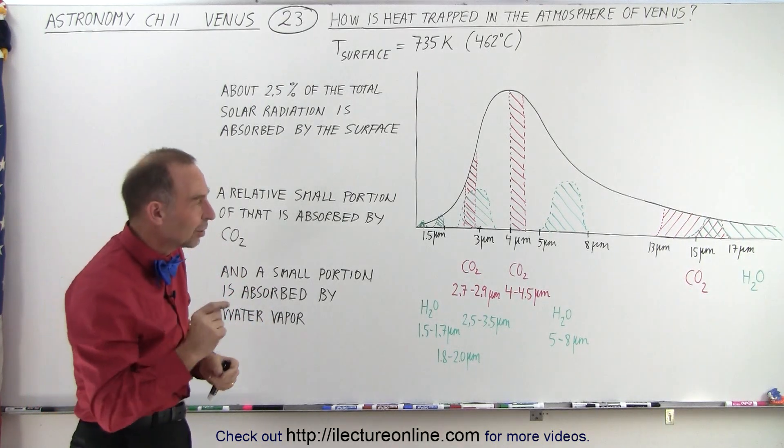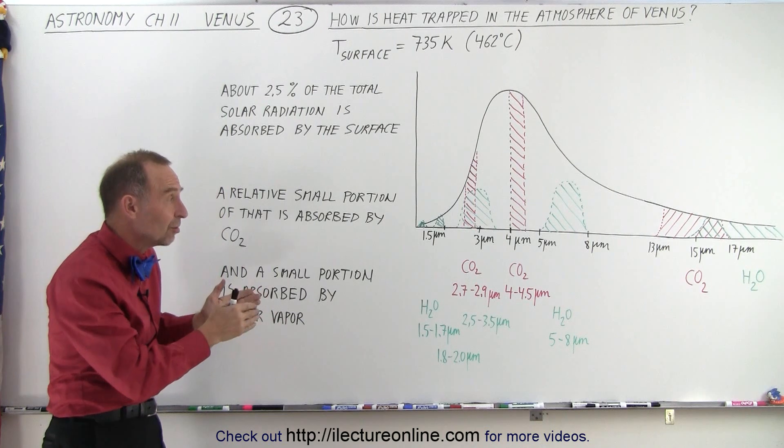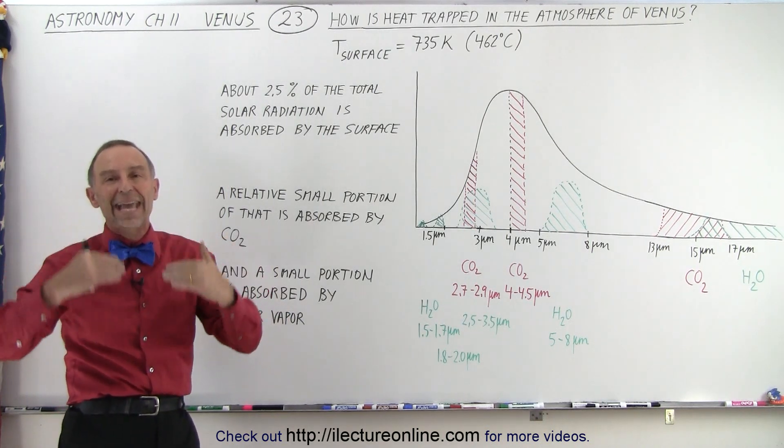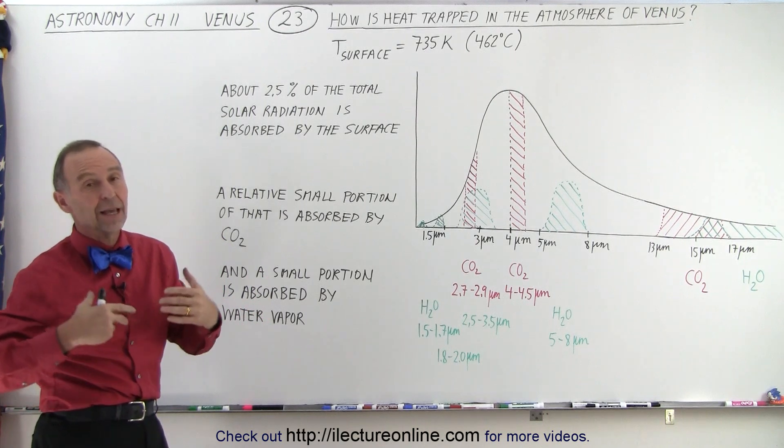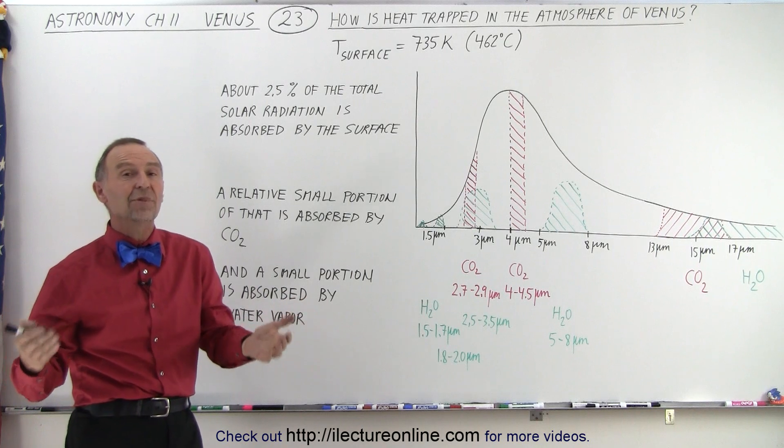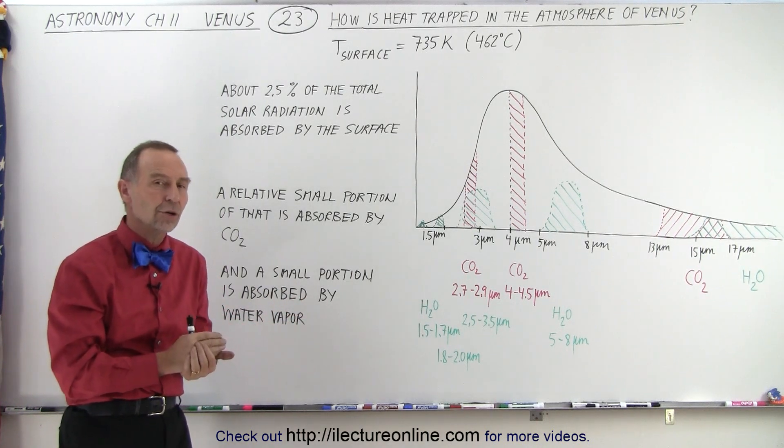So it's not so much the amount of heat that's being absorbed, but the amount of heat that's being retained because of the greenhouse effect, and primarily because of the enormous amount of atmosphere, about 90 times the atmosphere as compared to Earth, and that is why it is so hot on Venus.